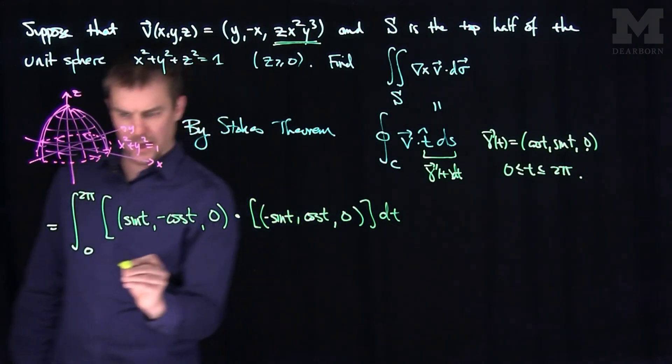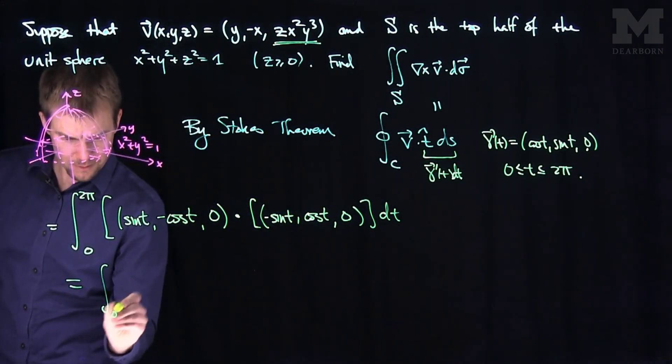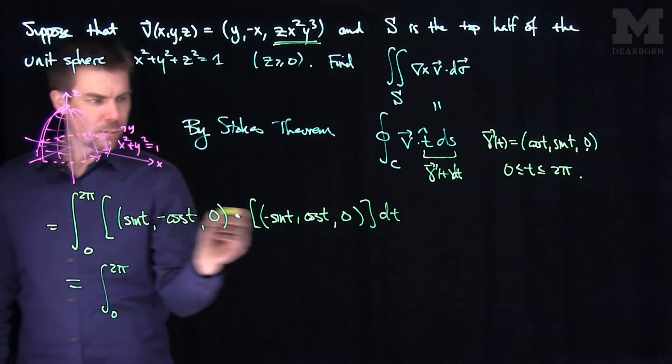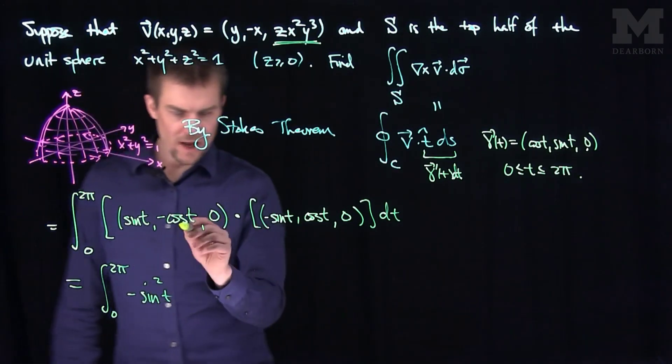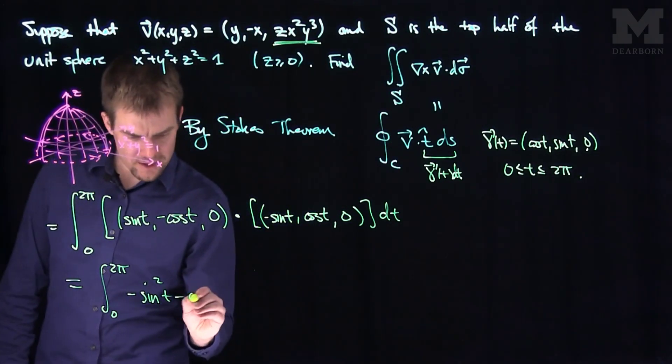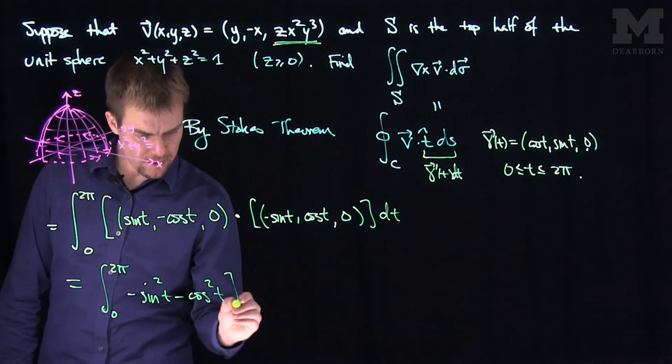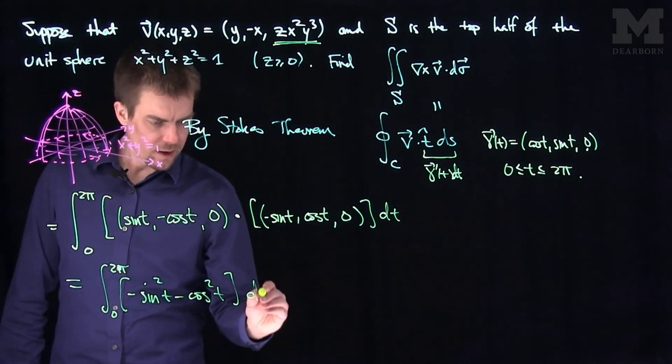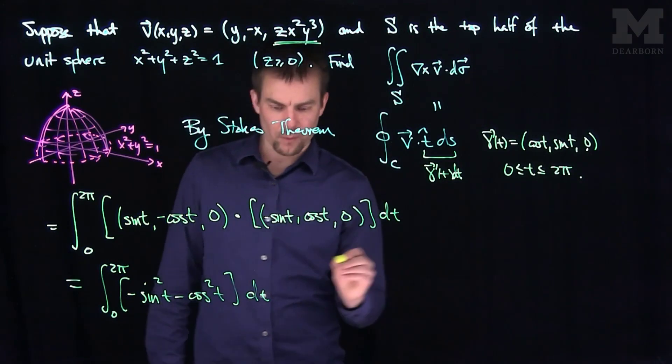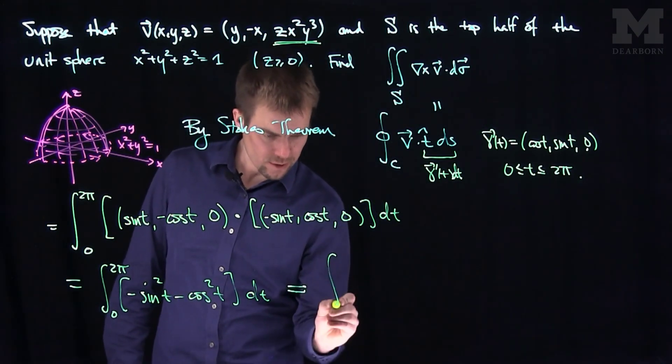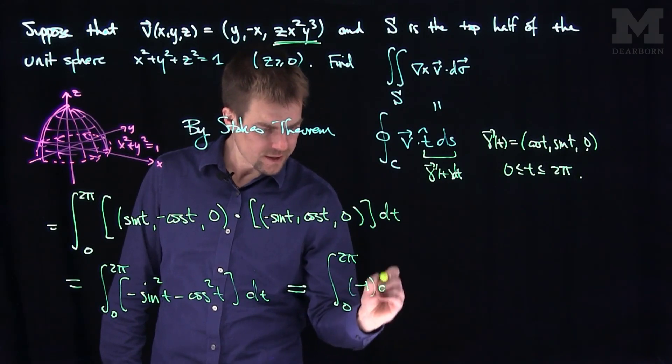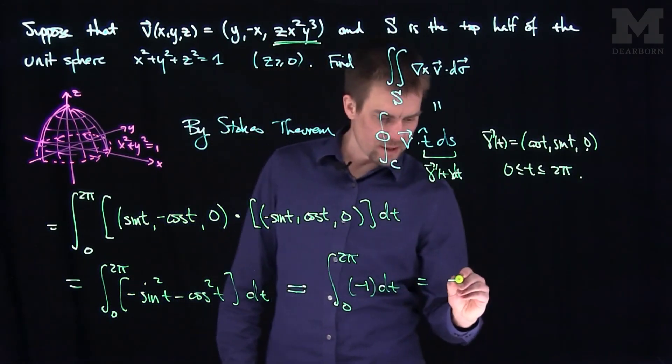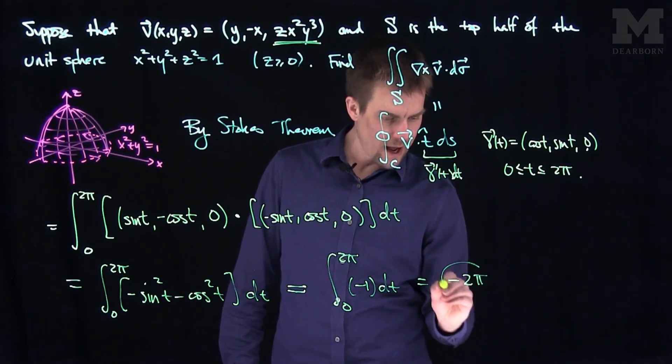We dot these together, what we'll get is we'll get the integral from zero to two pi. Then we'll have sine times sine, so we'll have a negative sine squared of t. And then cosine times negative cosine, that's negative cosine squared of t. All this is dt. Well, that term in parenthesis is just equal to negative one, so this is equal to the integral from zero to two pi of negative one dt. And therefore we get the final answer, which is going to be negative two pi.